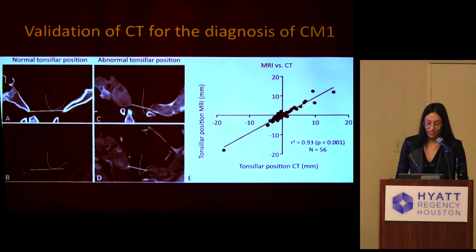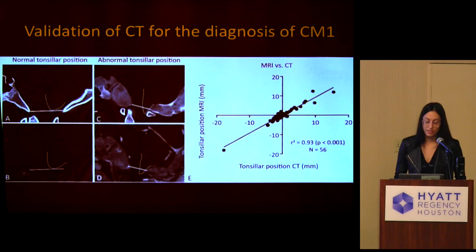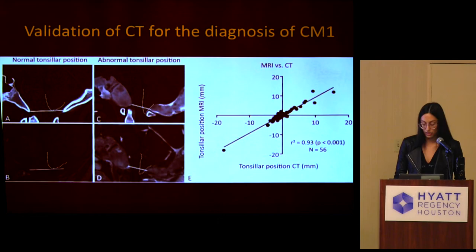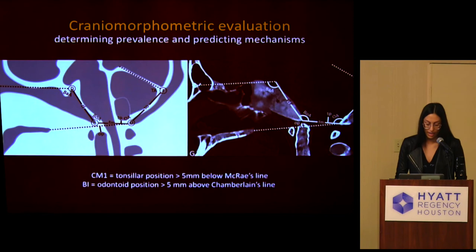Typically, the diagnosis of Chiari malformation is made on MRI, but CT is better for visualizing bony structures. All 171 of our patients had previous CTs, but only 93 had MRIs. So we decided to do the study using CT scans. To validate this approach, we compared concurrent MRI and CT scans from 56 patients. There was good correlation, with a Spearman correlation coefficient of 0.9 and a regression coefficient of 0.93.